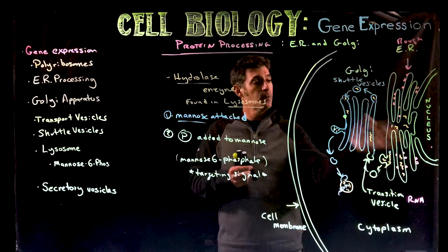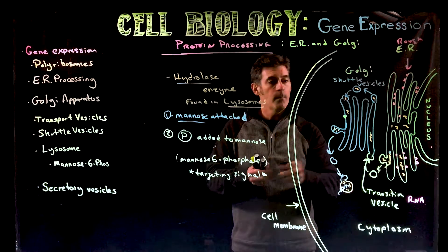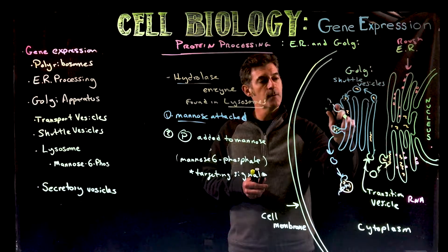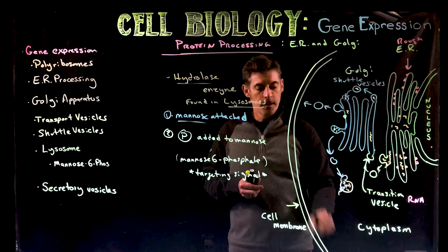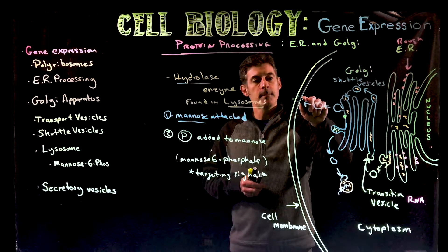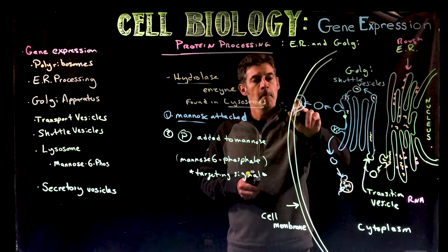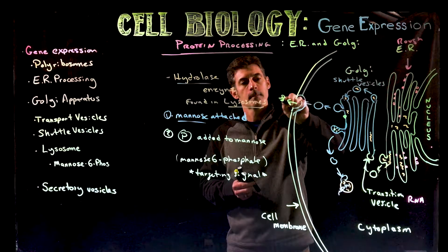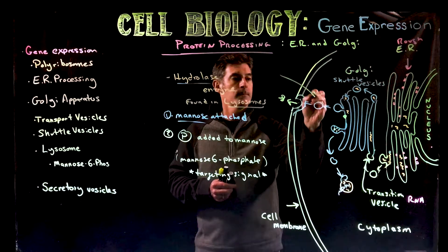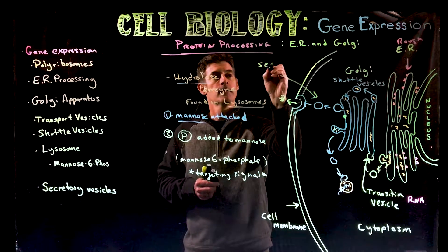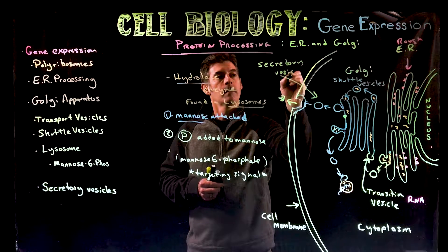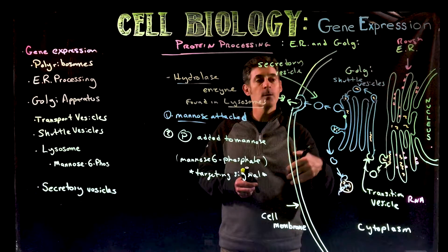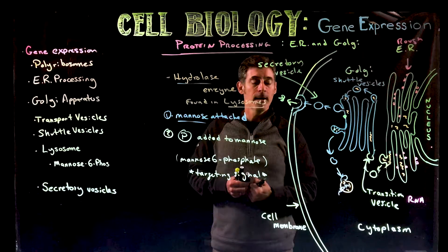Another possibility — for a totally different protein, not the hydrolase — let's say there's a protein that is released from the cell. Leaving the Golgi, we could get another type of vesicle that forms and actually moves toward the outer cell membrane. When it fuses with it, its contents can be dumped out of the cell. We call this a secretory vesicle because it's going to secrete the contents. Various types of cell signals might be released in this particular way — the cell creates a signal molecule, packages it, and releases it.